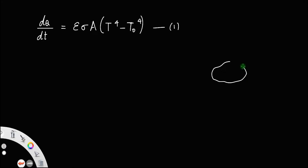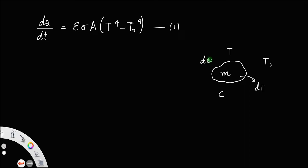Suppose you have a mass m, and let C be its specific heat capacity. Let T be the temperature of the body and T₀ the surrounding temperature. If the temperature of the body drops by an amount dT, then the heat transfer dQ will be equal to mass times specific heat capacity times the change in temperature of the body. Since the heat is lost, you have to apply a minus sign.